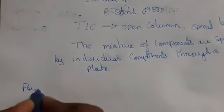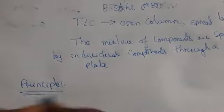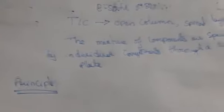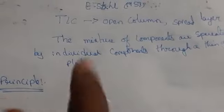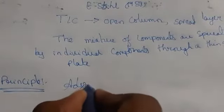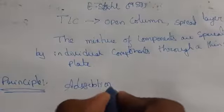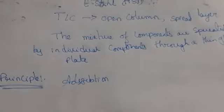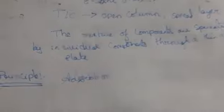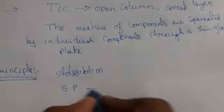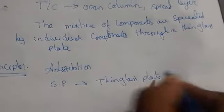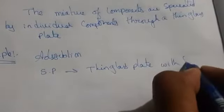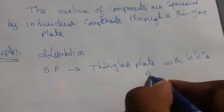As discussed in column chromatography, the principle depends on adsorption. In the same way, thin layer chromatography also depends upon adsorption. The stationary phase is the thin glass plate coated with silica powder or alumina.